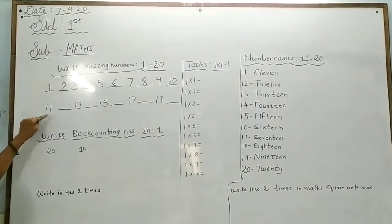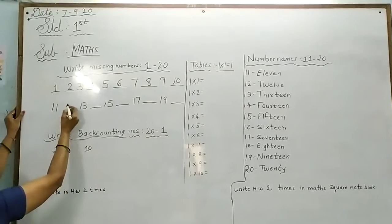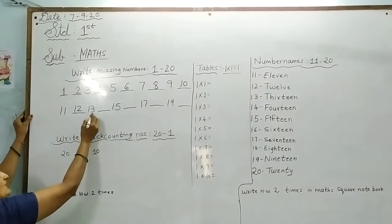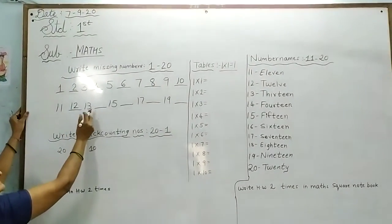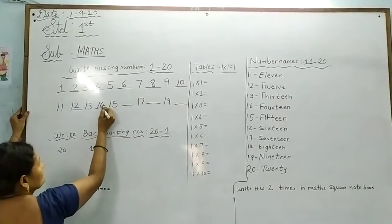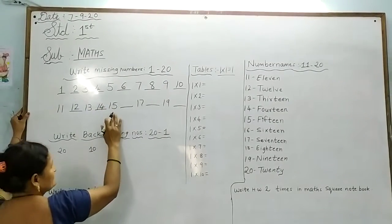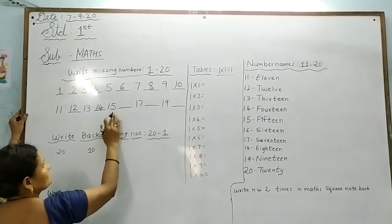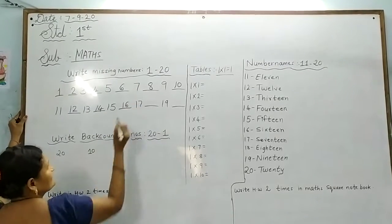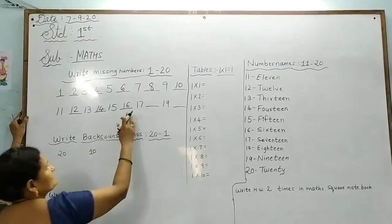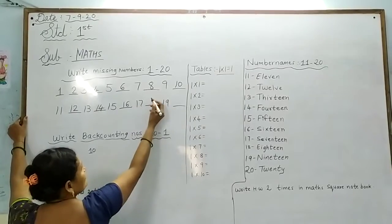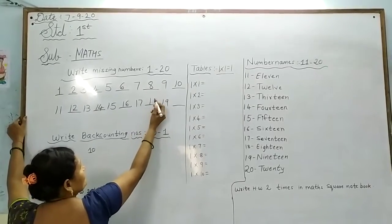Now next: 11. After 11, 12. After 12, 13. After 13, 14. After 14, 15. After 15, what do we have to do? 16. After 16, what do we have to do? 17. After 17, what do we have to do? 18.